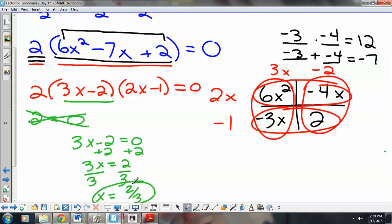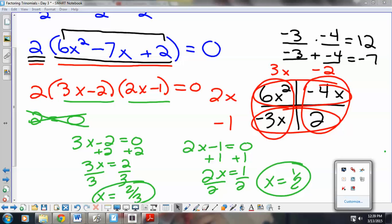That means if I put 2 thirds in for x, that's going to make this one factor here 0. So, let's find the factor that's going to make this third parentheses 0. So, we'll take 2x minus 1 equals 0. Add 1. 2x equals 1. Divide by 2. x equals 1 half. So, we have 2 answers. 2 thirds and 1 half.